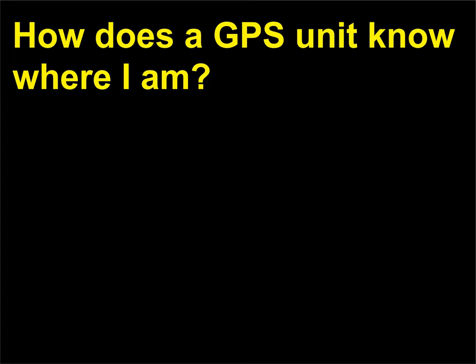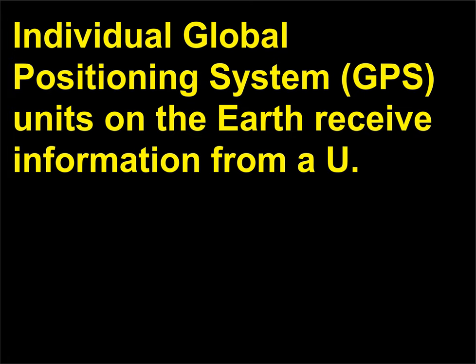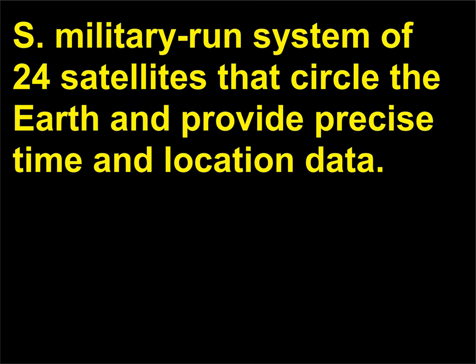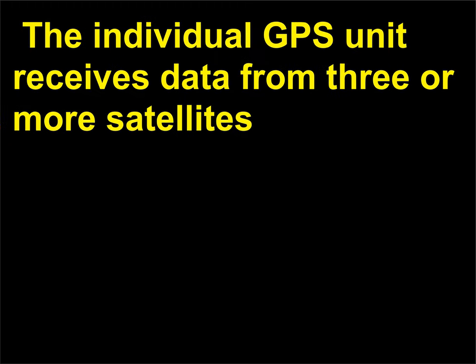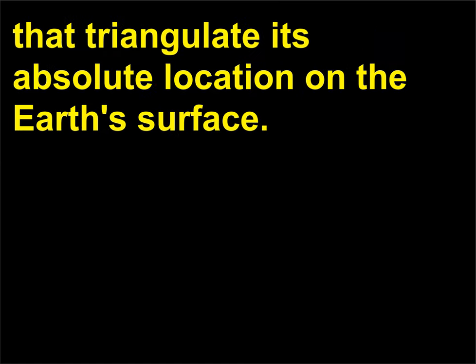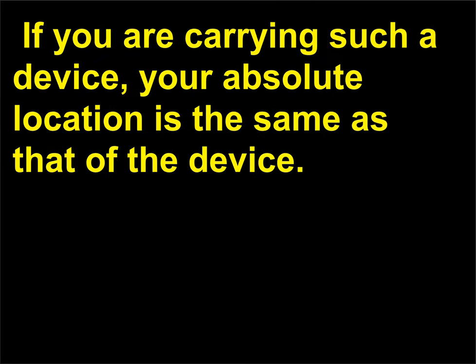How does a GPS unit know where I am? Individual global positioning system (GPS) units on the Earth receive information from a U.S. military-run system of 24 satellites that circle the Earth and provide precise time and location data. The individual GPS unit receives data from three or more satellites that triangulate its absolute location on the Earth's surface. If you are carrying such a device, your absolute location is the same as that of the device.